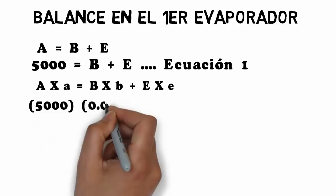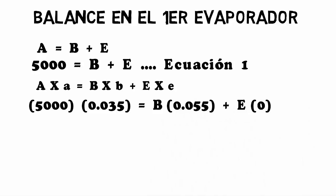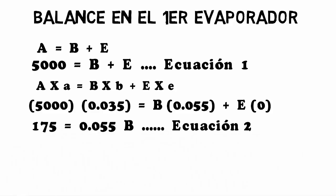With the equation in the following form: 5000 × 0.035 equals B × 0.055. Solving these operations, we get 175 equals 0.055·B. This will be our second equation.